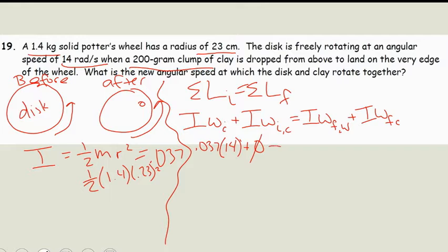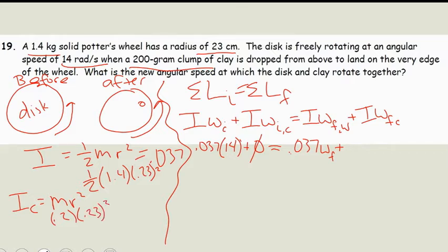That equals our rotational inertia after, which is 0.037 times omega final, plus our inertia for our clay. The clay is a point mass, so that's going to be m·r². The mass is 0.2 kilograms and r is 0.23 meters because it's at the very edge of the wheel. So we have 0.2 times 0.23 squared, times omega final. The omega final for both of them is going to be the same.